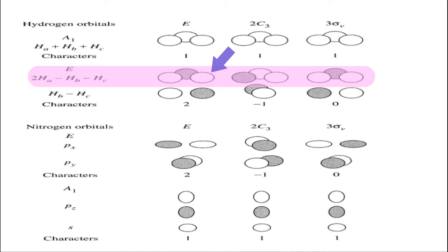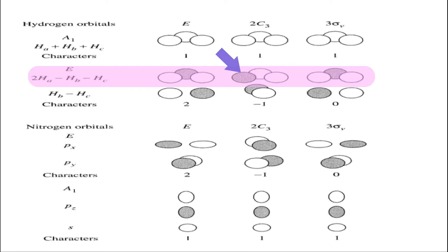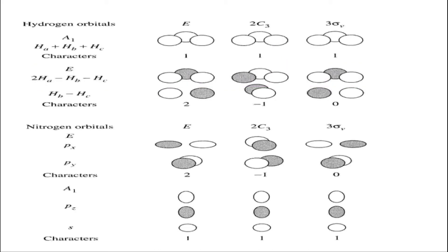For one E combination: consider the first hydrogen white (positive), the middle gray (negative), and the third white (positive) — a positive-negative-positive distribution. For identity, there is no change, so the character is 1. After a C3 rotation by 120° or 240°, one orbital becomes negative and the other two positive. After a vertical plane operation through the second hydrogen, that hydrogen remains positive and the other two become negative.